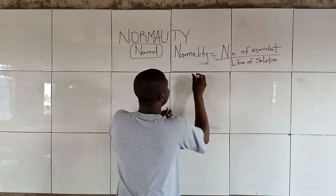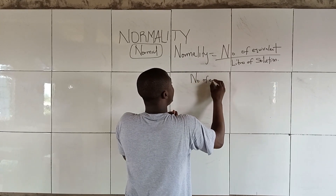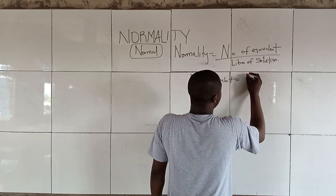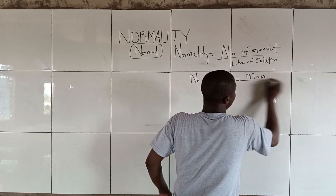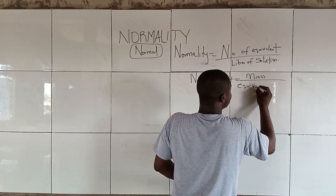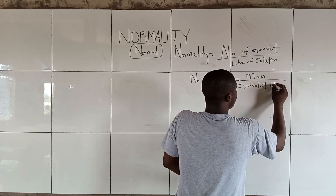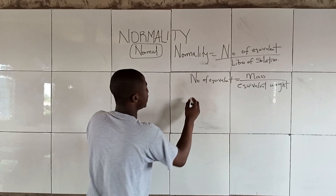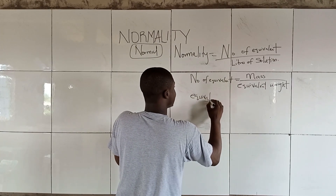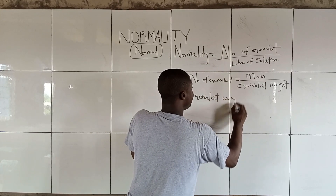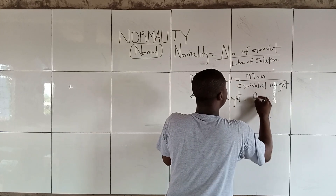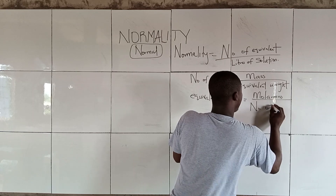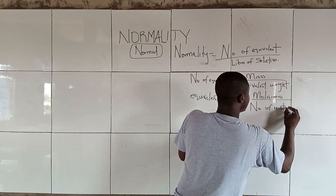Now the question we ask ourselves: what is number of equivalents? Number of equivalents is given as mass over equivalent weight. Another question: what is equivalent weight? Equivalent weight is equal to molar mass over number of reacting units.